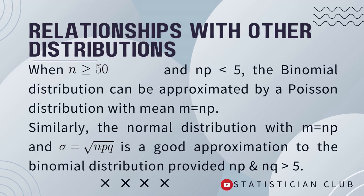Similarly, the normal distribution with mean equal to np — where np is the mean of the binomial distribution — and standard deviation equal to √(npq), is a good approximation to the binomial distribution when both np and nq are greater than 5.